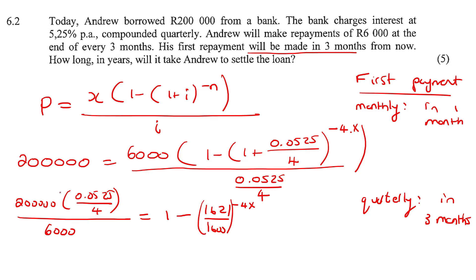Then you can also type this on the calculator. So if you go type that on the calculator, keep it as a fraction. So that'll be seven over 16. So let's actually write that over here. And then one minus 1621 over 1600 to the power of negative four X.